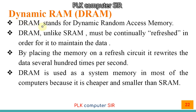Dynamic RAM. DRAM stands for Dynamic Random Access Memory. Unlike SRAM, DRAM must be continually refreshed in order to maintain the data. In SRAM there is no need to refresh periodically, but in DRAM we have to refresh. It is refreshed by placing the memory on a refresh circuit that rewrites the data several hundred times per second. DRAM is used as system memory in most computers because it is cheaper and smaller than SRAM.